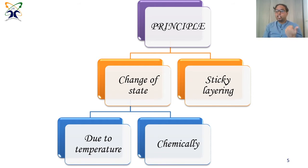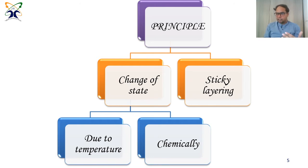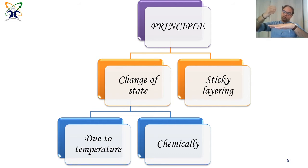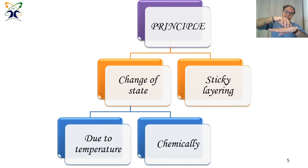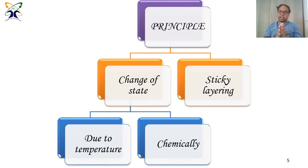The second thing is change of state. If the material we want to use for printing changes its state from liquid to solid, or from powder to solid, then we can print it. For example, hot wax is liquid — you pour it and it's liquid, but as soon as it falls down it solidifies due to its solidification temperature. If these two things are present — sticky layer nature and change of state — then we can 3D print any object using that sort of material.